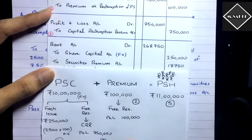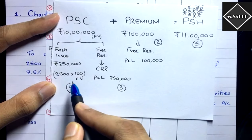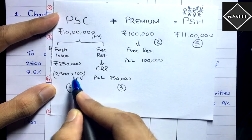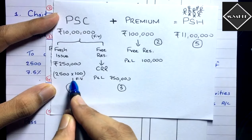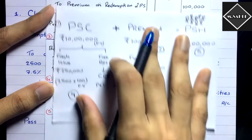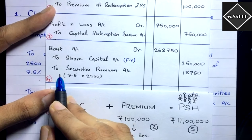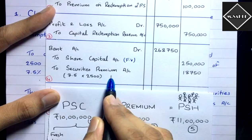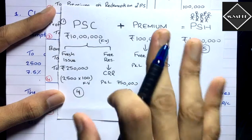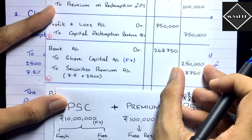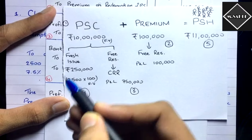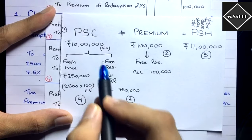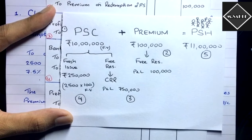An important clarification: while doing the replacement of capital calculation, we take only the face value (₹2,50,000) from the fresh issue — not the issue price of ₹107.5. In the journal entry itself, we pass the full entry including Securities Premium, but Securities Premium cannot replace preference share capital in the CRR calculation. Only face value replaces face value as per Section 55.